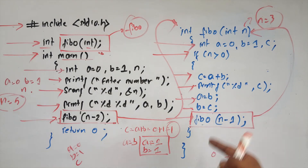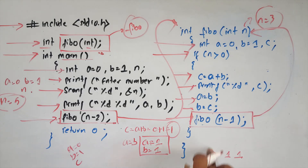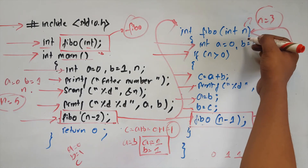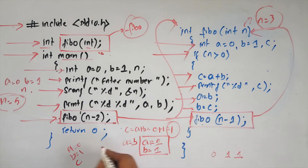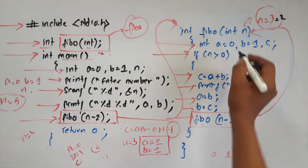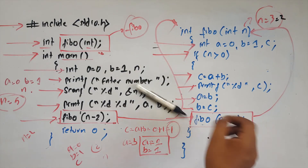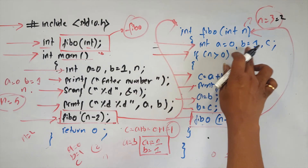Recursive terminating condition: n greater than 0. Here n value is 3, then 3 minus 1 gives n value 2. Here int a equals to 0, b equals to 1.